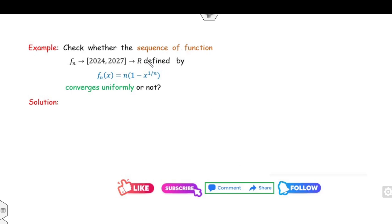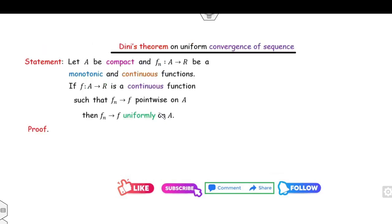In this lecture I will explain the proof of Dini's theorem as well as numerical examples showing how to check uniform convergence using Dini's theorem. But first let me quickly recall the definitions and the proof in a very simple manner. Also note: whenever we are working with Dini's theorem, the domain must be a compact set.